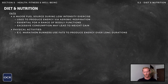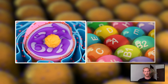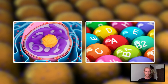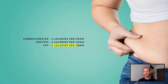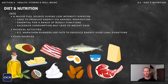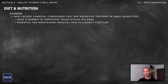Fat is a major source of fuel for athletes performing low-intensity endurance exercise, as it can be used to produce energy via aerobic respiration. It's a key component of all cell membranes, allows us to absorb fat-soluble vitamins, protects the vital organs and assists in insulating the body. Fat is highly calorific at 9 calories per gram, meaning excess consumption could lead to weight gain. Good sources of fat include meat, eggs, oily fish, nuts, olive oil, butter, cream, avocados, coconut oil and full-fat natural yogurt.